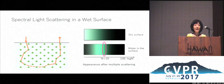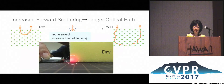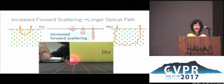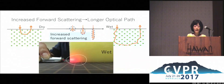But why does the path length get longer? Let's look at an example of light path length in a dry sponge. As the surface becomes wet — more wet — there is increased forward scattering. As a result, the overall light path length becomes longer.